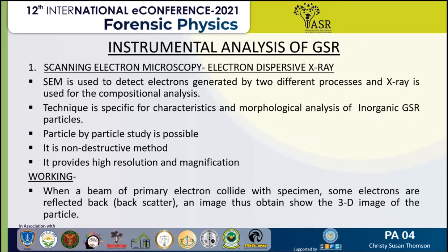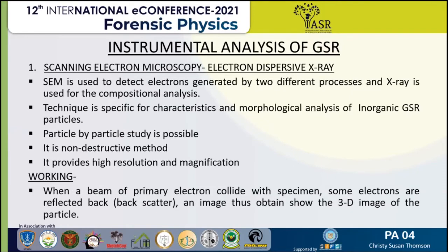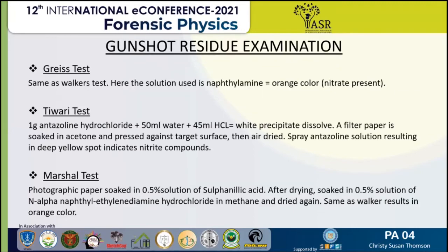Diaminobenzidine hydrochloride in methanol is used for detection of lead. Here, similar to the Walker test, a purple color is formed if lead is present. Next is the Greiss test, which is similar to Walker's test. The solution uses naphthylamine instead of 2-naphthylamine-4,6-disulfonic acid used in Walker's test, and the color obtained is orange if nitrate is present.